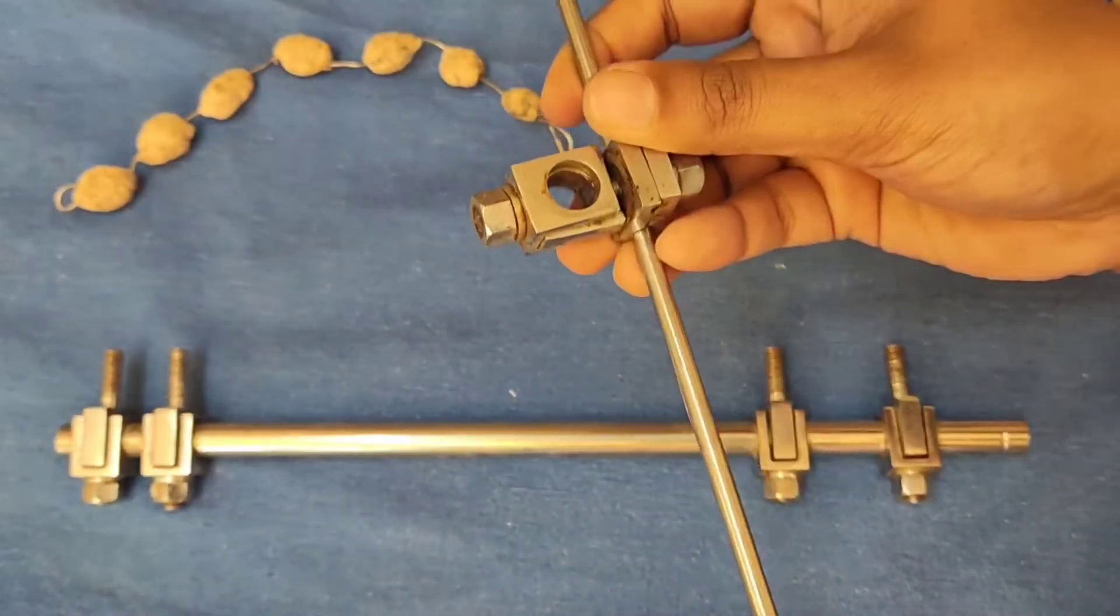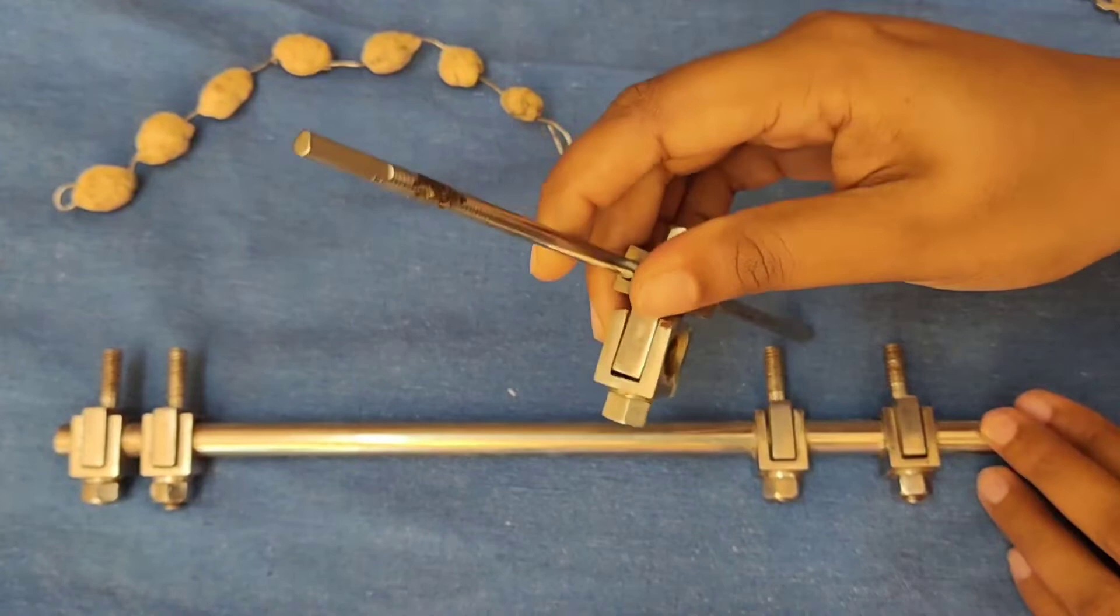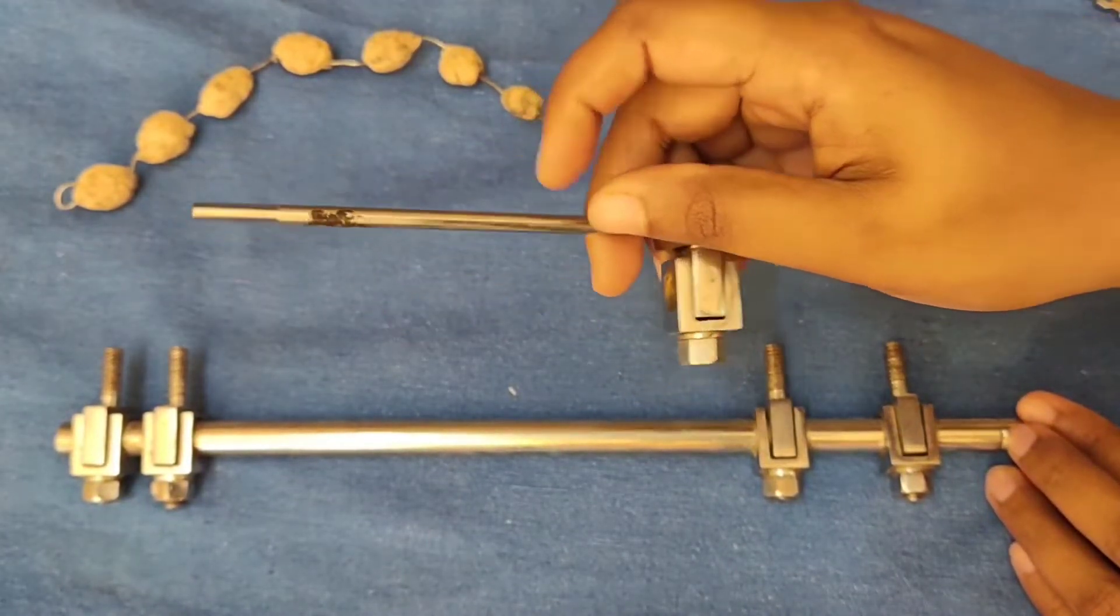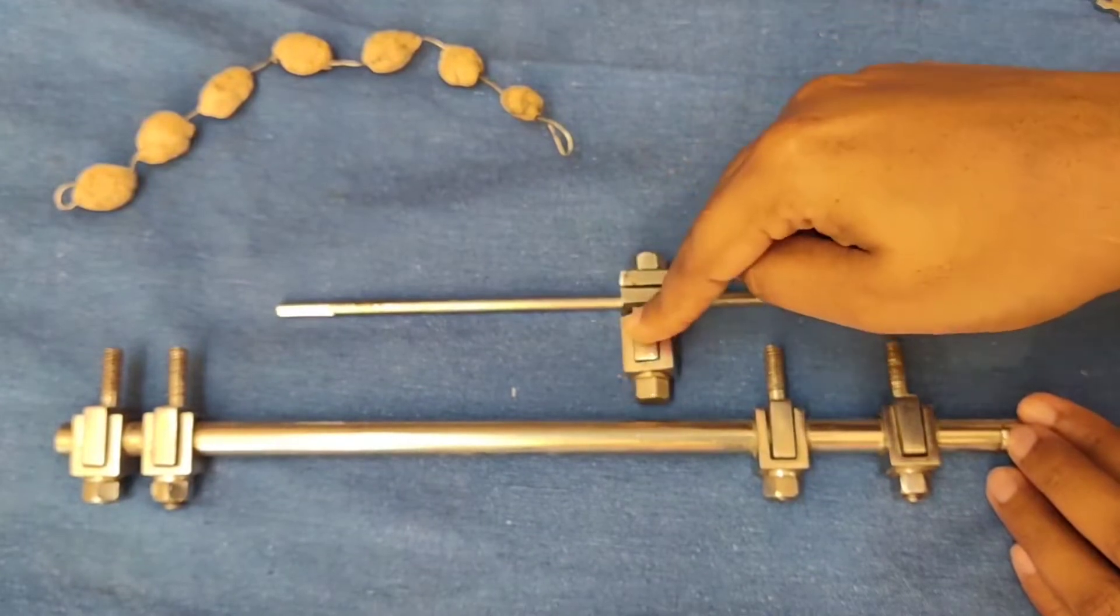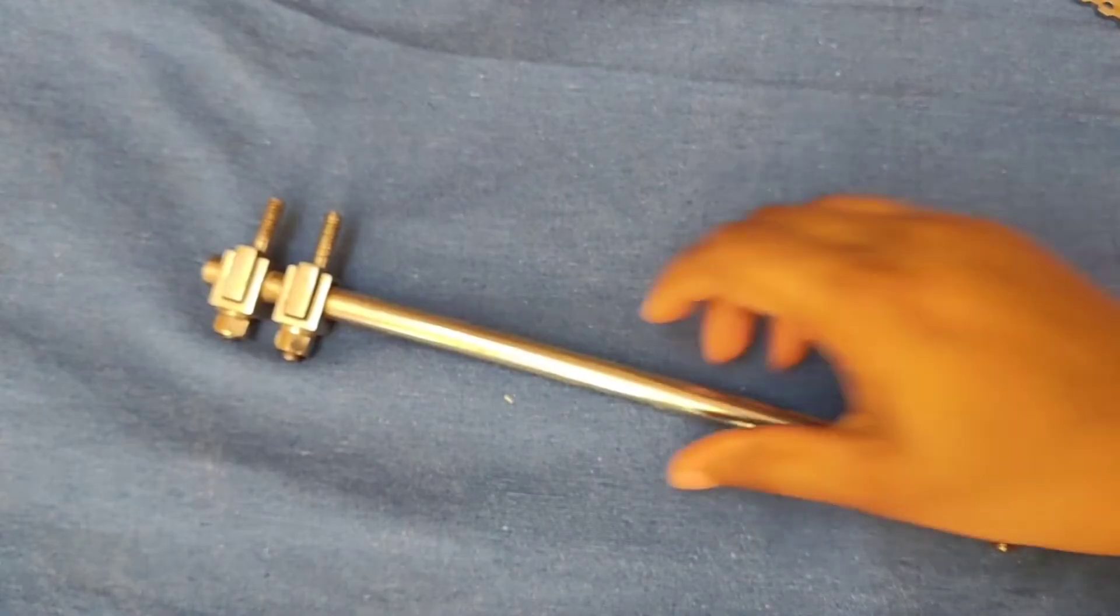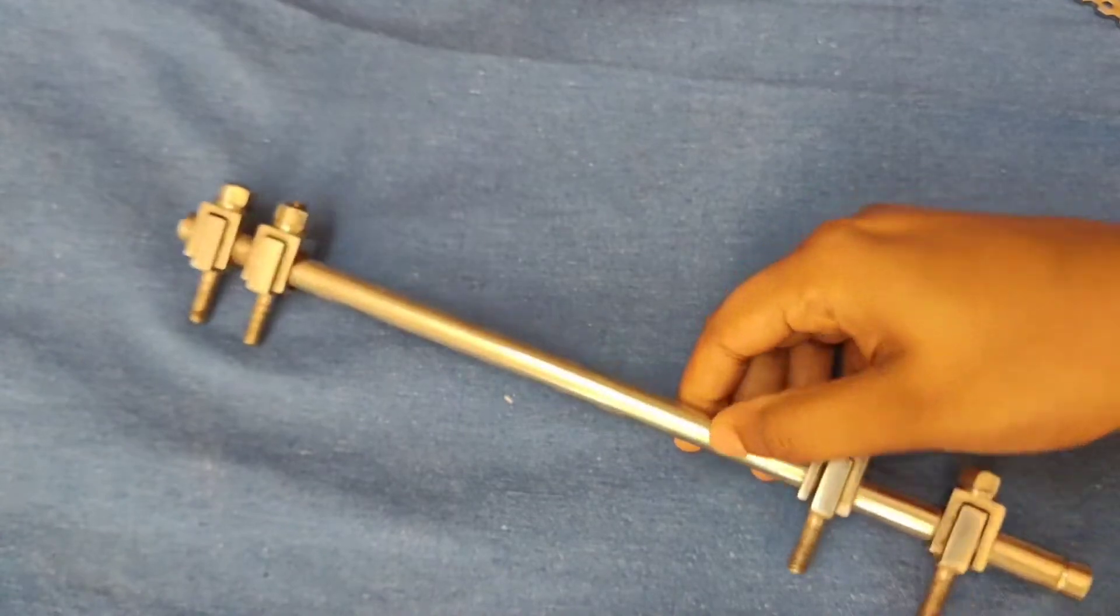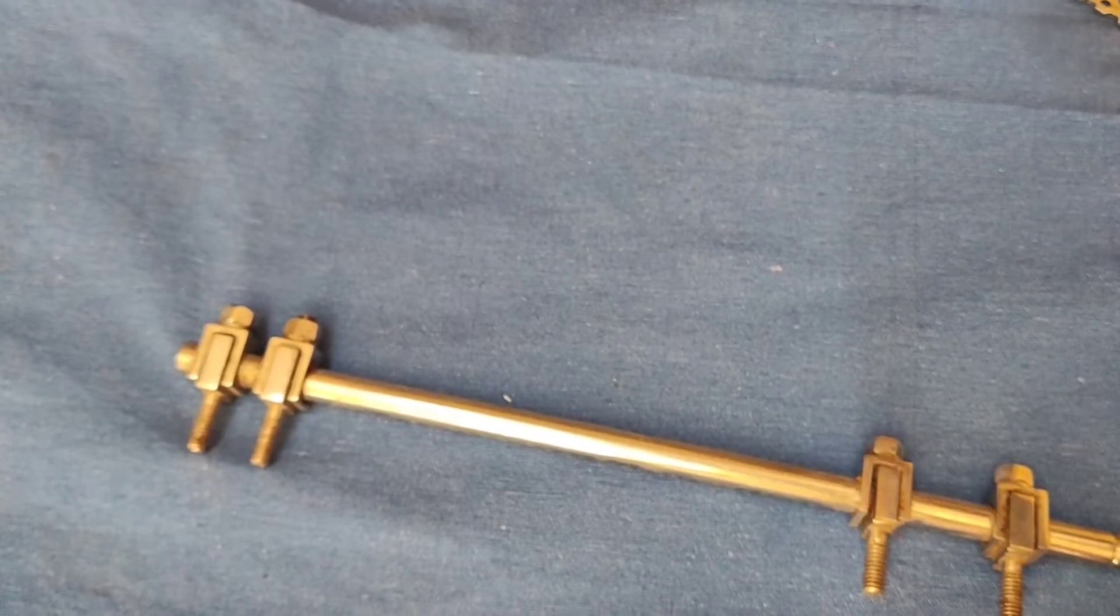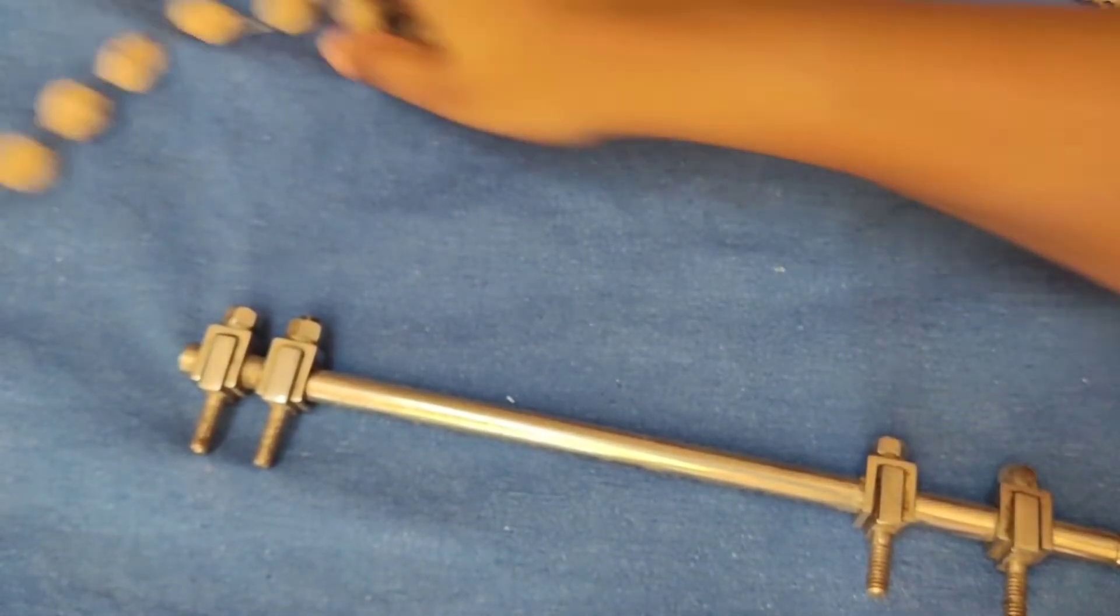The major indications of external fixator are in severe open fracture, closed fracture with severe soft tissue injury, open fracture involving bone loss or in compartment syndrome after fasciotomy or in limb lengthening procedures or in bone transport. External fixation could be a temporary fixation or could be a final fixation of fractures.